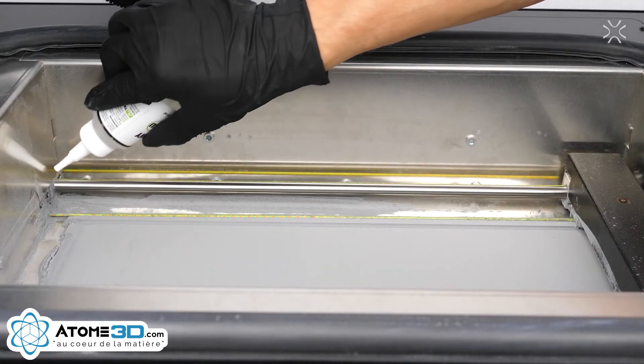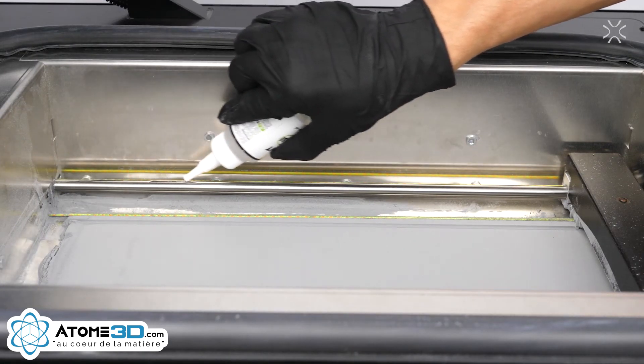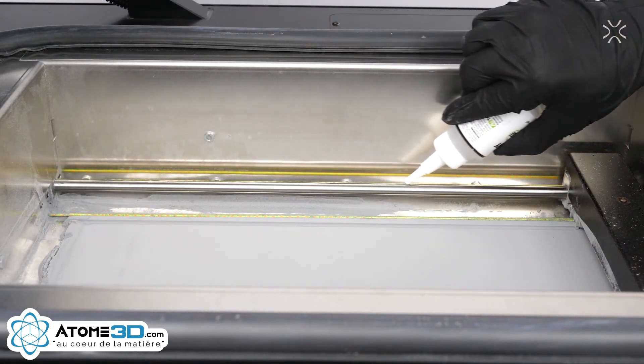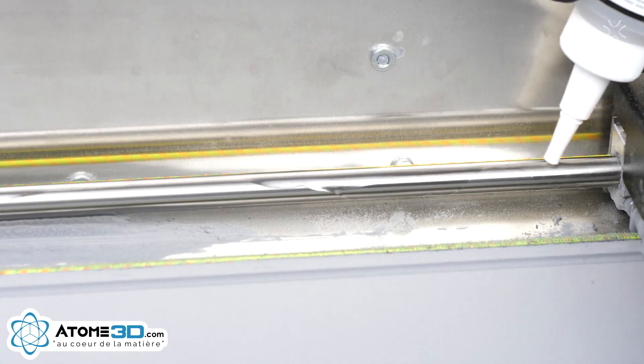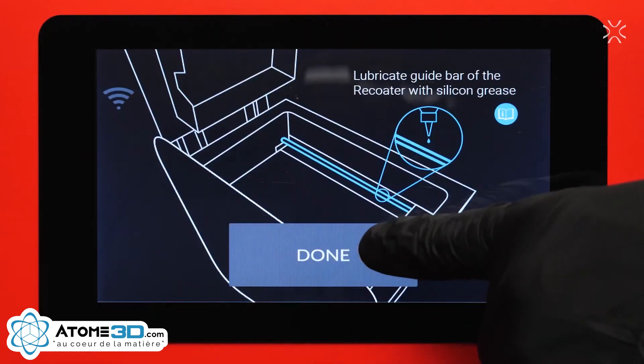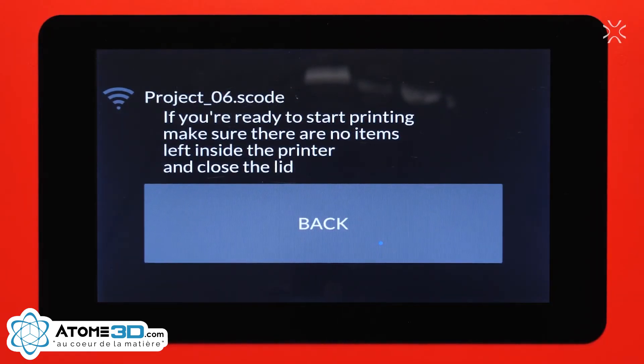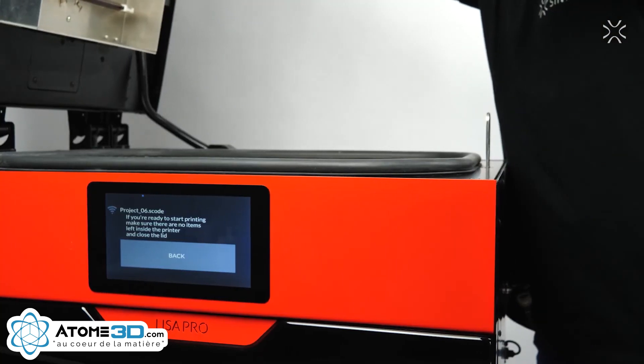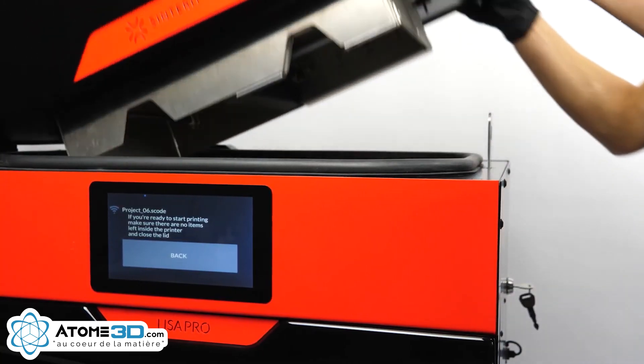After that, apply smoothly silicone oil on the whole Recoater's guide bar. Don't worry if the oil drops into the powder. It will evaporate. Now the printer is ready to start printing.